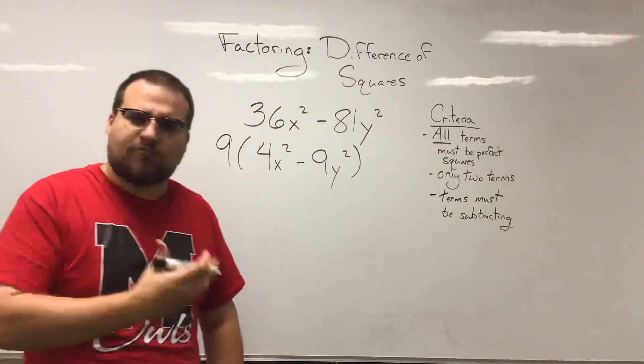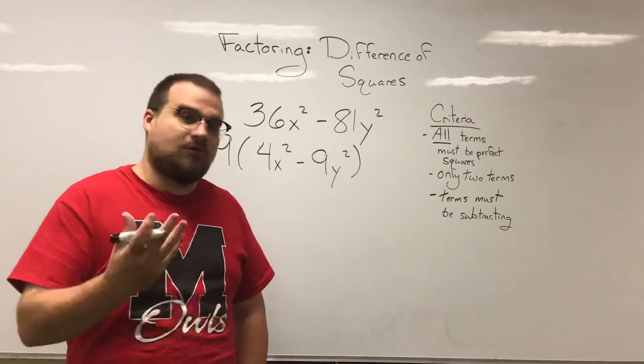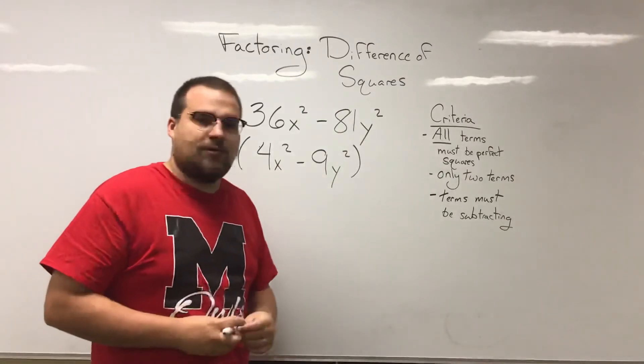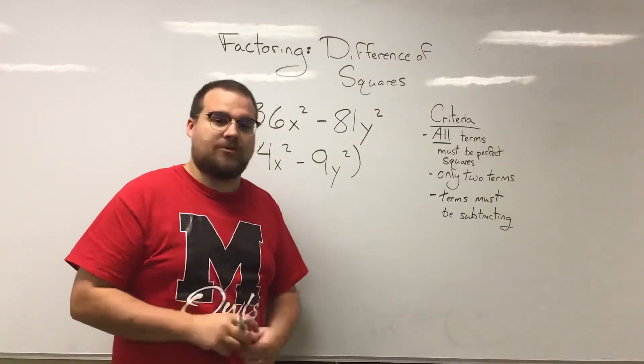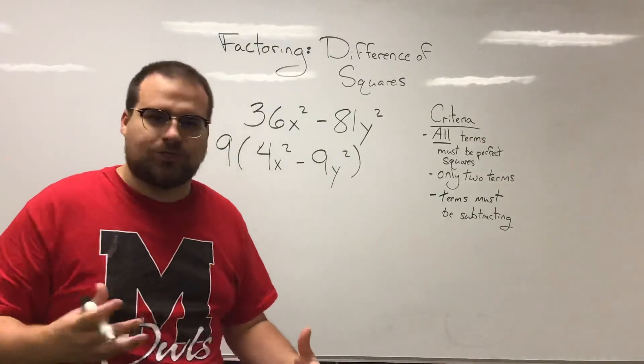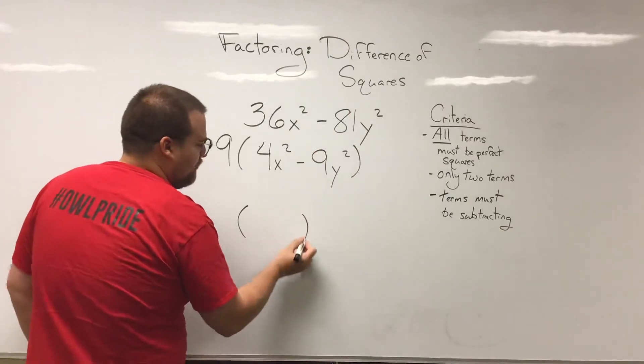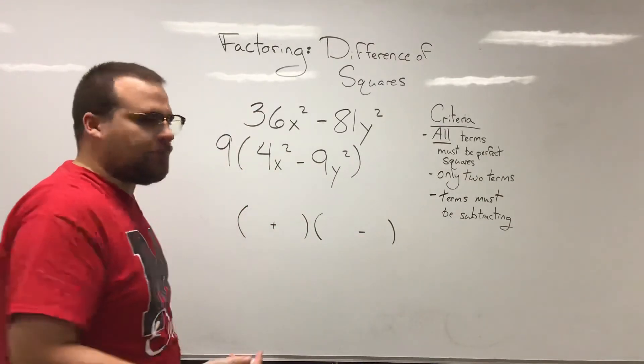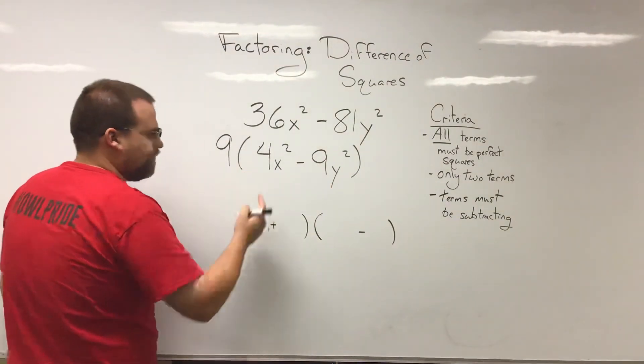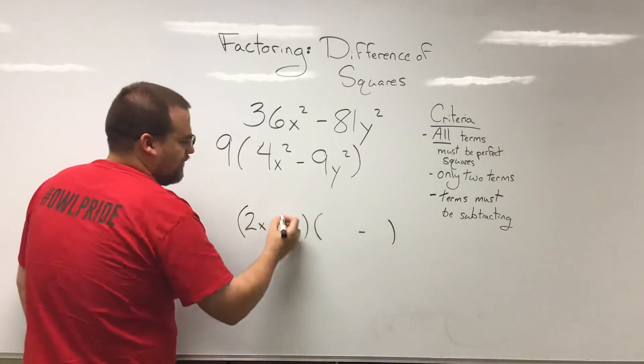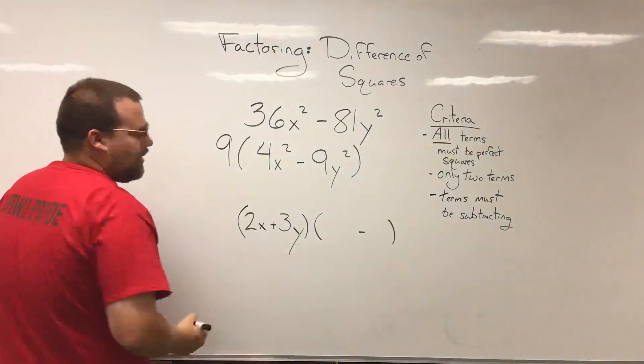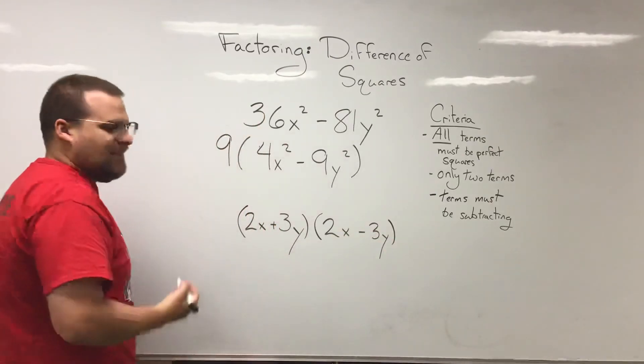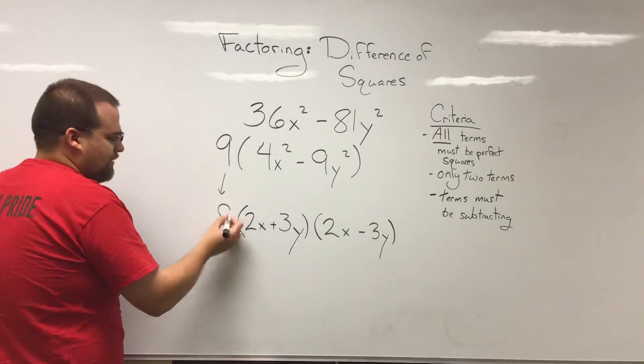Do we still have a difference of squares binomial here left over after taking out that 9? We do. 4 is a perfect square. x squared is a perfect square. 9 is a perfect square, as is y squared. And they're subtracting, exactly what we want them to be doing. So I'm going to go ahead and find my binomial versions of this. So we're going to split it into two binomials, one with addition happening, the other with subtraction happening. And I'm going to square root every one of my terms. 4 square roots to become 2, we will then have x. The square root of 9 is 3, and then the square root of y squared is y. We'll have the exact same stuff here with just that minus sign: 2x and 3y. And then we'll go ahead and drop down that 9. That 9 is still written with our answer.